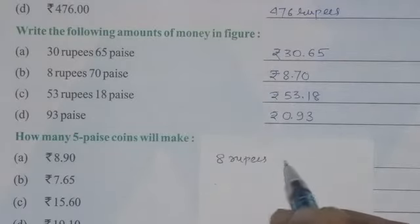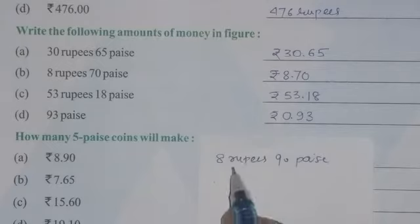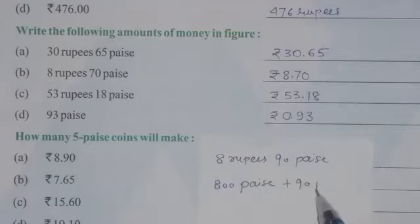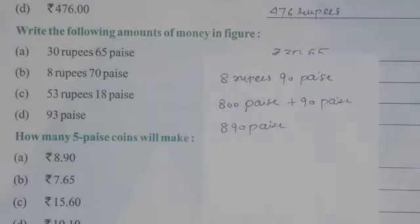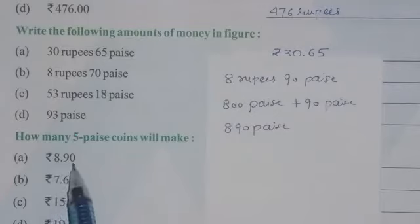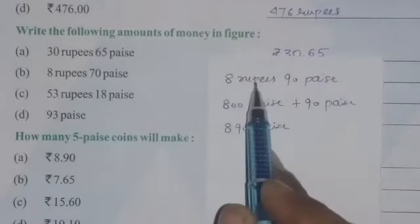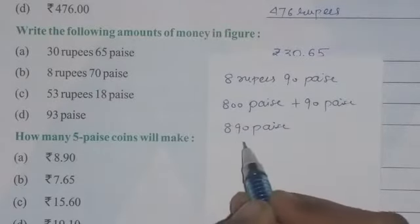First, you have to convert the rupees into paise. As you all know, in 1 rupee there are 100 paise, so in 8 rupees there will be 800 paise. Then 800 paise plus 90 paise gives a total of 890 paise. Now we have to divide this number by 5.